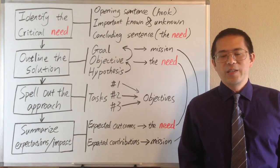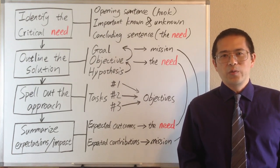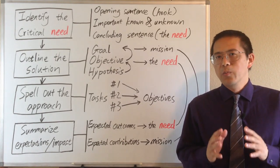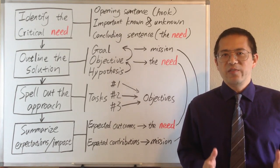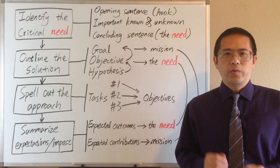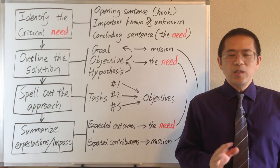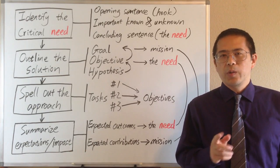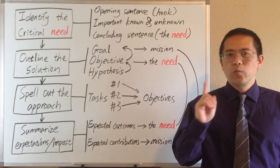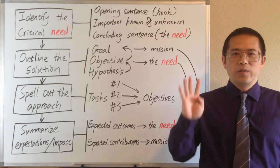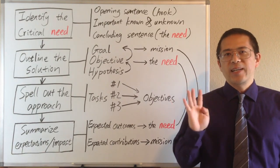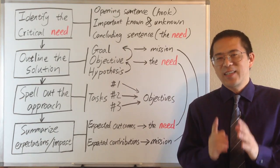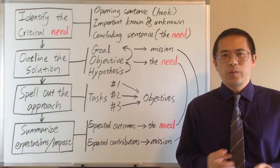Hey, it's Dark Li here with Better Life Research Tips. In this video, I will show you a simple model that can help us to develop a research proposal. This model requires us to generate an outline of our research proposal all in one page, with four paragraphs that link to each other. These four paragraphs highlight the key elements of a research proposal.